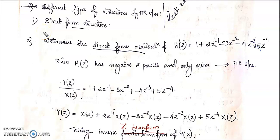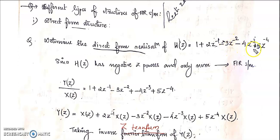Next we discuss different types of FIR filter structures, starting with the direct form structure. We want to realize a direct form structure, and we can start with a problem. We consider a transfer function of the filter: H(Z) = 1 + 2Z⁻¹ − 3Z⁻² − 4Z⁻³ + 5Z⁻⁴. We want to realize this expression in direct form.